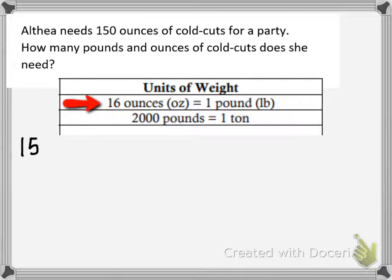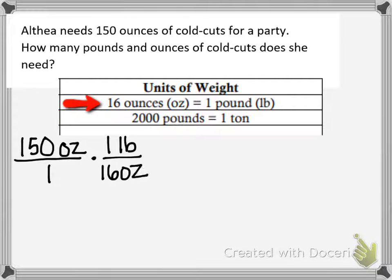So one way to do this is using dimensional analysis. We're going to start with 150 ounces over 1, and then multiply that by the conversion factor of 1 pound over 16 ounces. The reason I put 16 ounces in the denominator is so my unit ounces will cancel out, and I will be left with 150 pounds in the numerator over 16 in the denominator.